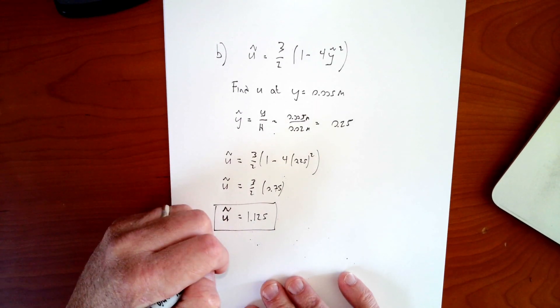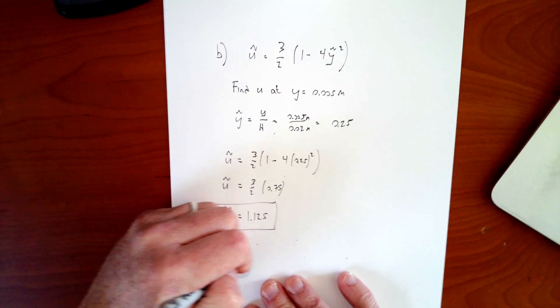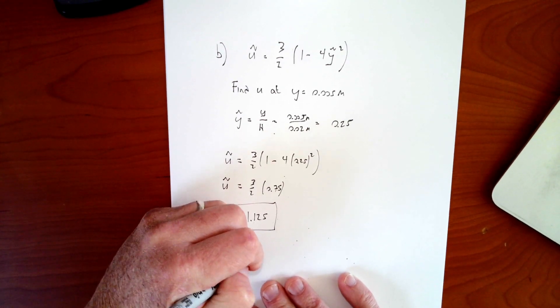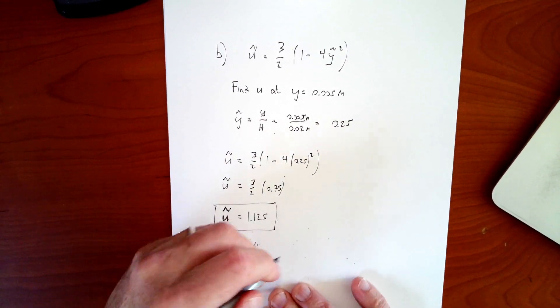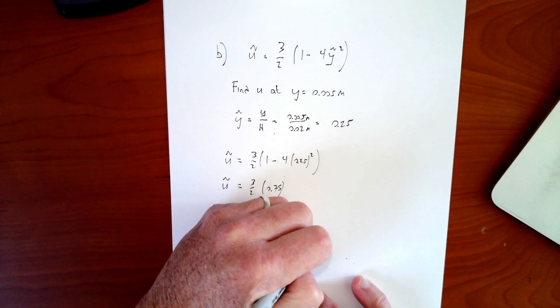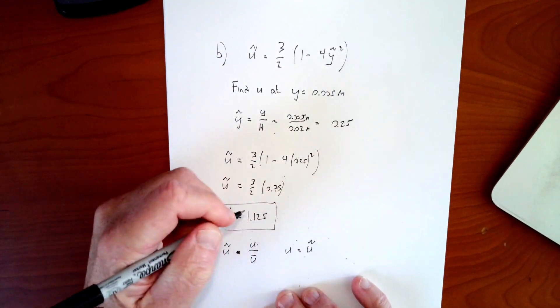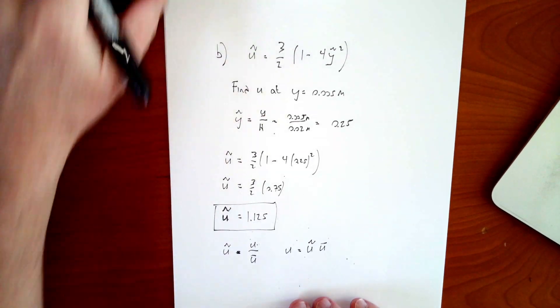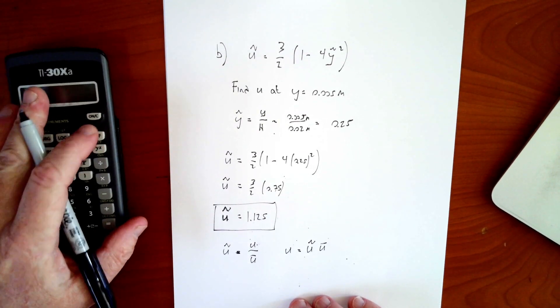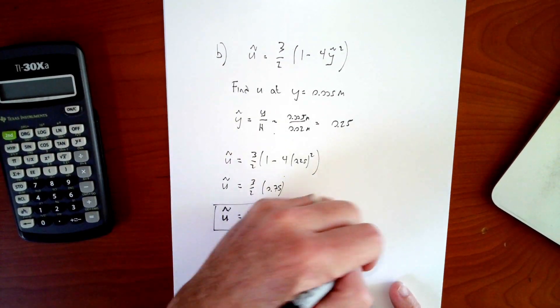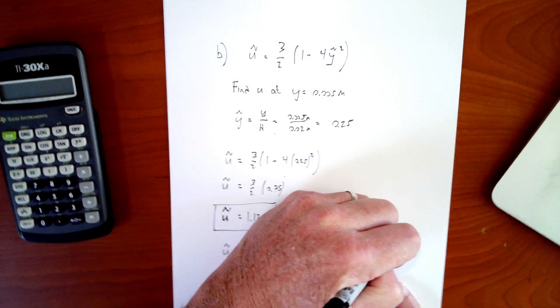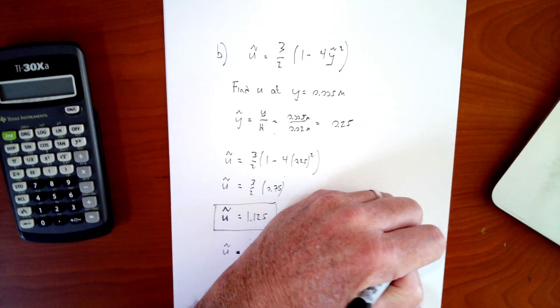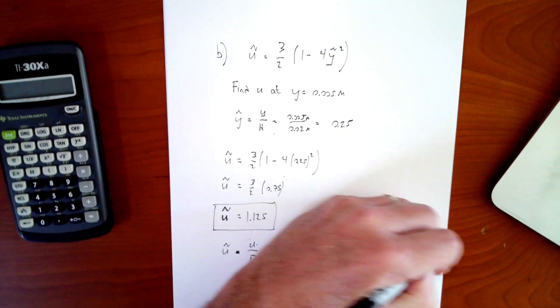Now if I want to turn it into a real velocity, I remember that my real velocity is equal to u divided by the average velocity. So my real velocity is the u tilde times the average velocity. Well, I know the average velocity because I just found it a few seconds ago.